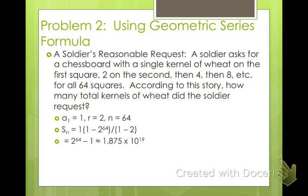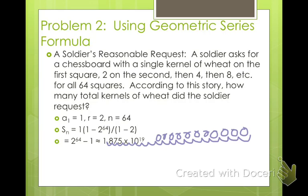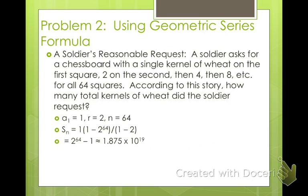So 10 to the 19th means there are 19 decimal places, which is a really, really big number. I'm not sure if the king knew math very well, because that doesn't seem like a reasonable amount of kernels of wheat to me.